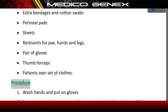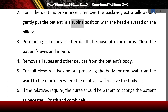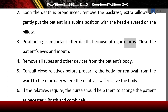Procedure: wash hands and put on gloves. Soon after death is pronounced, remove the backrest and extra pillows, and gently put the patient in a supine position with the head elevated on the pillow. Positioning is important after death because of rigor mortis.